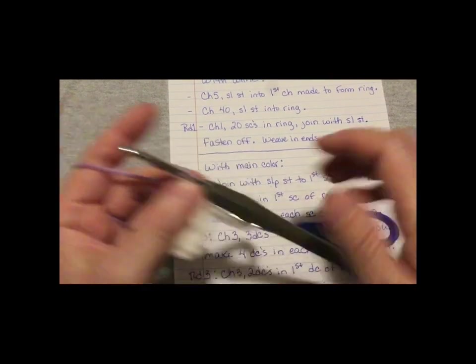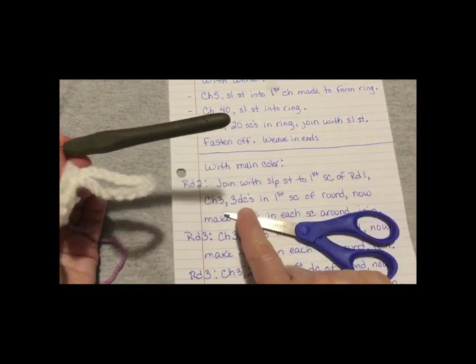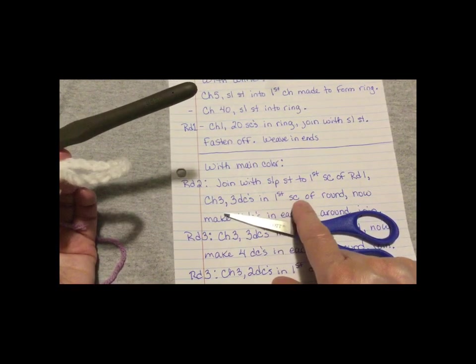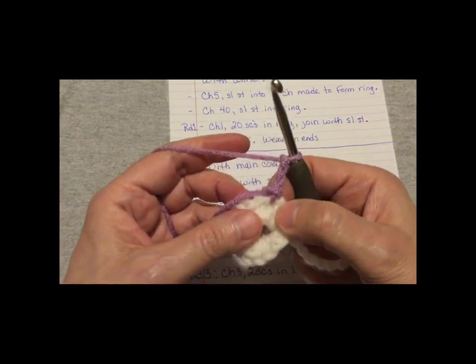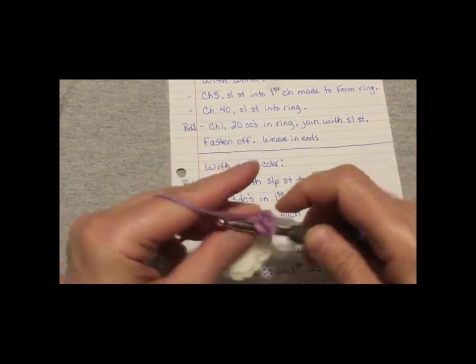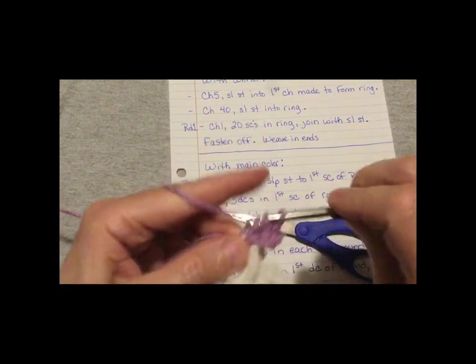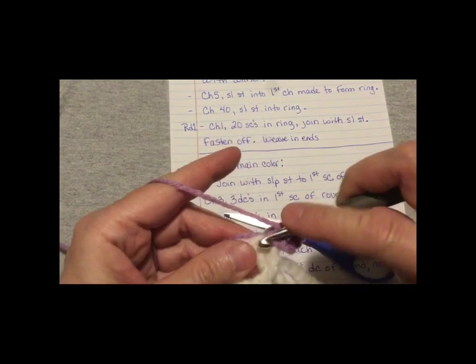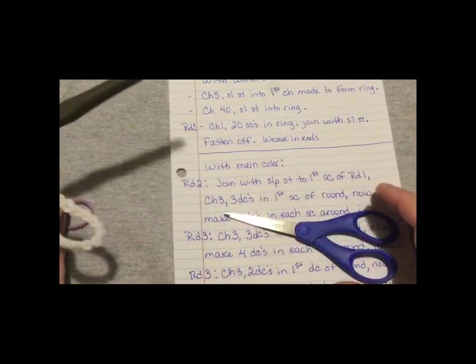Chain three. So one, two, three. Three double crochets in first single crochet of round. So that would be the same one that I slip stitched in to join it. So let's do three. One, two, three.